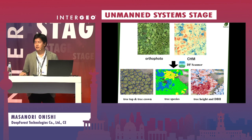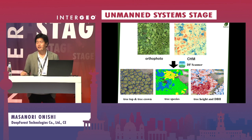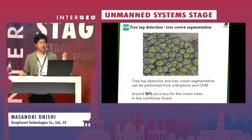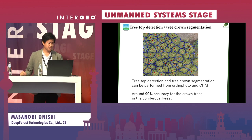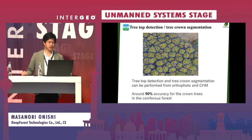From those data, DF Scanner can analyze forest information — specifically, tree top detection, tree crown segmentation, tree species, tree height, and DBH (diameter at breast height). Tree top detection and crown segmentation are performed from aerial photo and CHM, with around 90% accuracy for crowns in coniferous forests. In broad-leaved or mixed forests, it is a very difficult task.